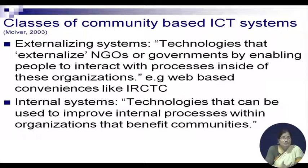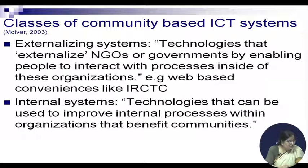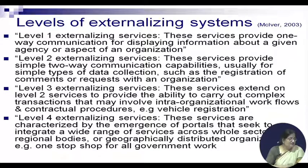There are two broad classes of community-based ICT systems. The first class is technologies that externalize NGOs or governments by enabling people to interact with processes inside those organizations — for example, web-based conveniences like railway booking in India. The second class is internal systems — technologies used to improve internal processes within organizations that benefit communities.